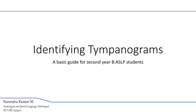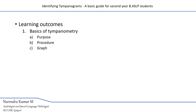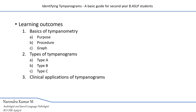Hi everyone. In this video lecture, we will be discussing how to identify various types of tympanograms. This lecture will be a basic guide for secondary BSLB students. At the end of this video lecture, students will be able to understand the basic concepts of tympanometry in terms of purpose, procedure, and the tympanogram graph. They will also be able to identify different types of tympanograms: type A, type B, and type C.